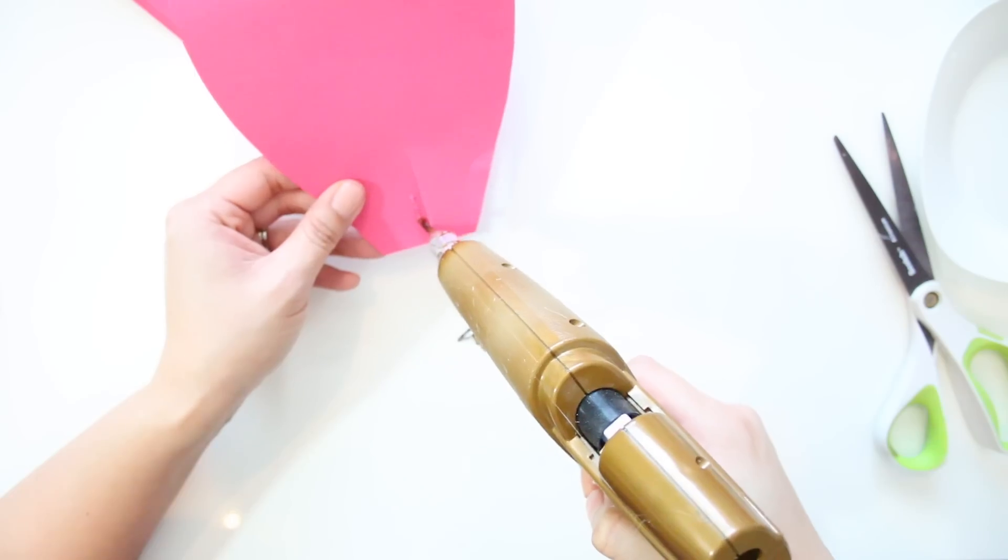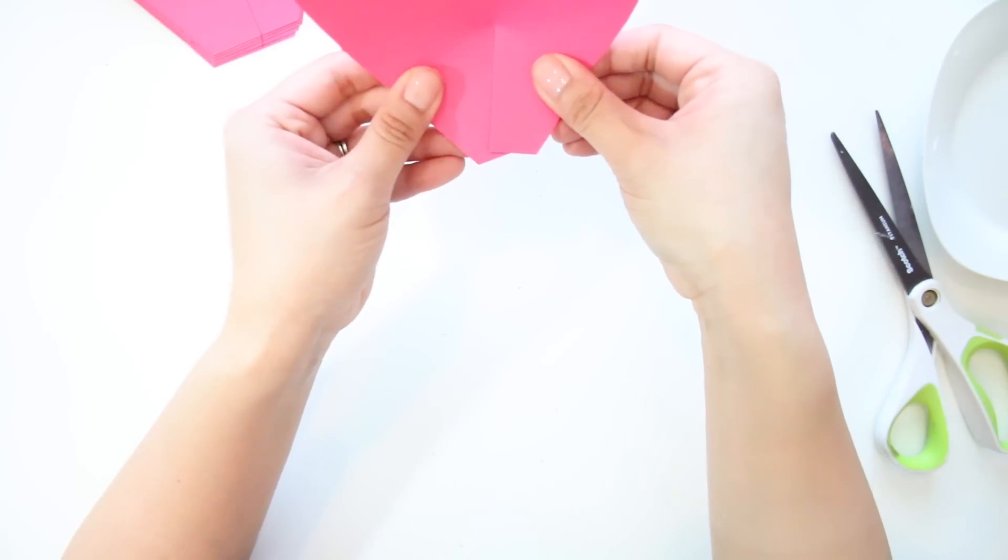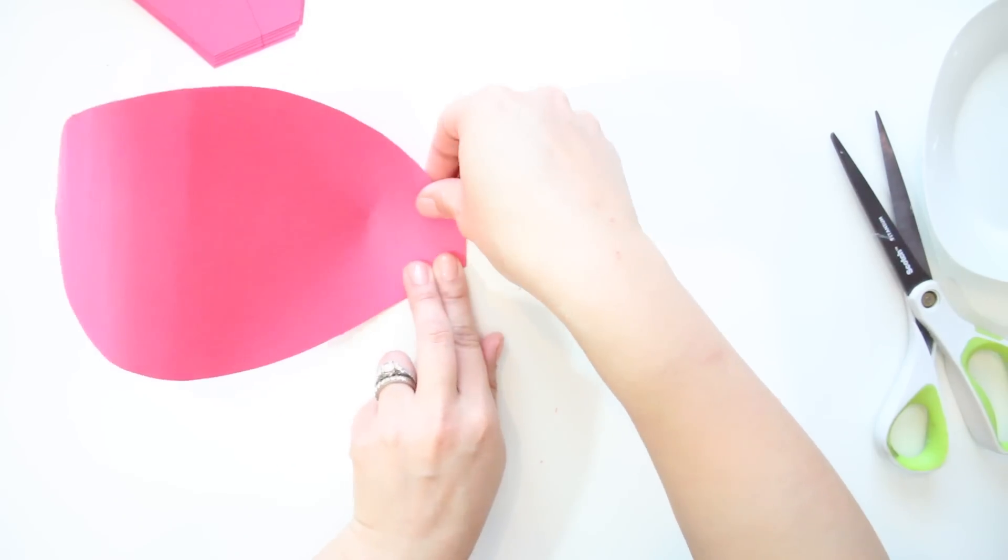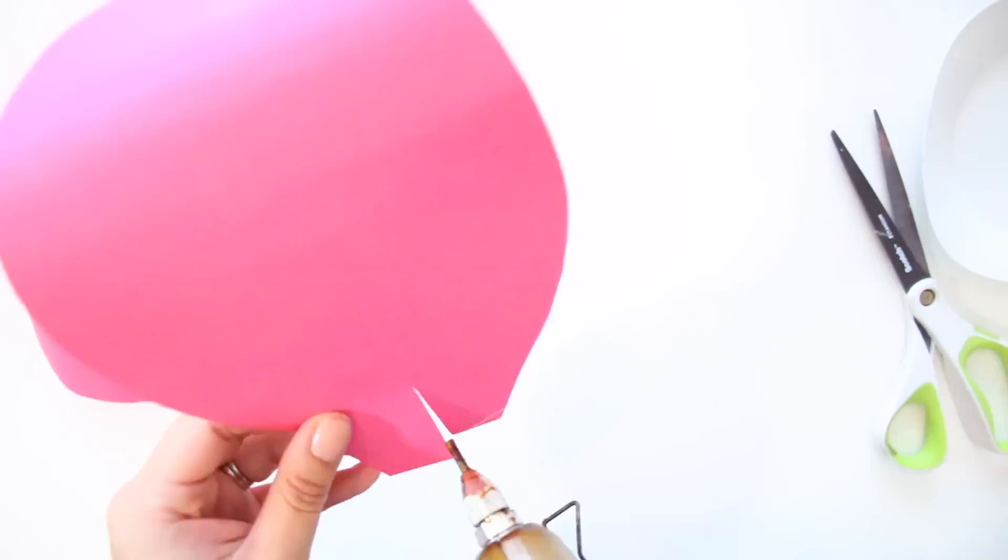Use your glue gun, add a little glue to one flap, and glue the other flap on top of it. Remember for your outer petals, you don't want to overlap them too much. Do this to all 6 of the large petals.